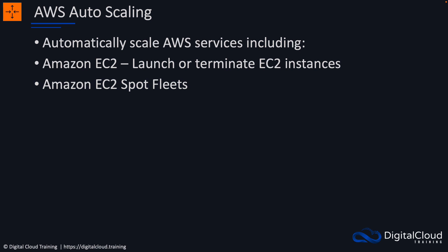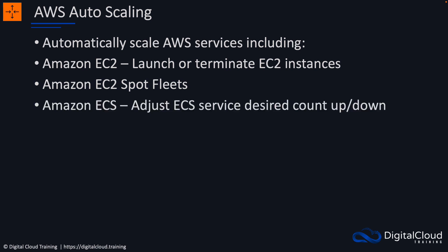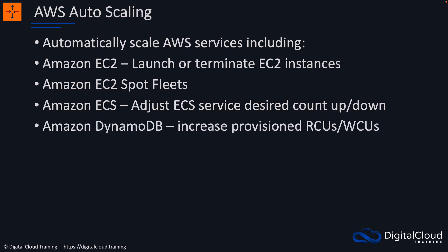Then we've got EC2 spot fleet, which is used when you're using the spot pricing model. We also have Amazon Elastic Container Service, where it adjusts the service desired count up and down. The way that we define how many containers we want to run in ECS is by creating a service, and it then modifies the number of containers running automatically for us.